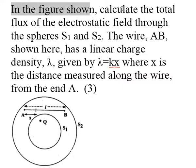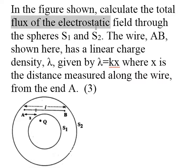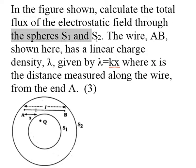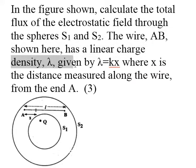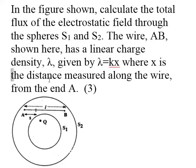In the figure shown, calculate the total flux of the electrostatic field through the sphere S1 and S2. The wire AB shown here has a linear charge density lambda given by lambda equals kx, where x is the distance measured along the wire from the end A.